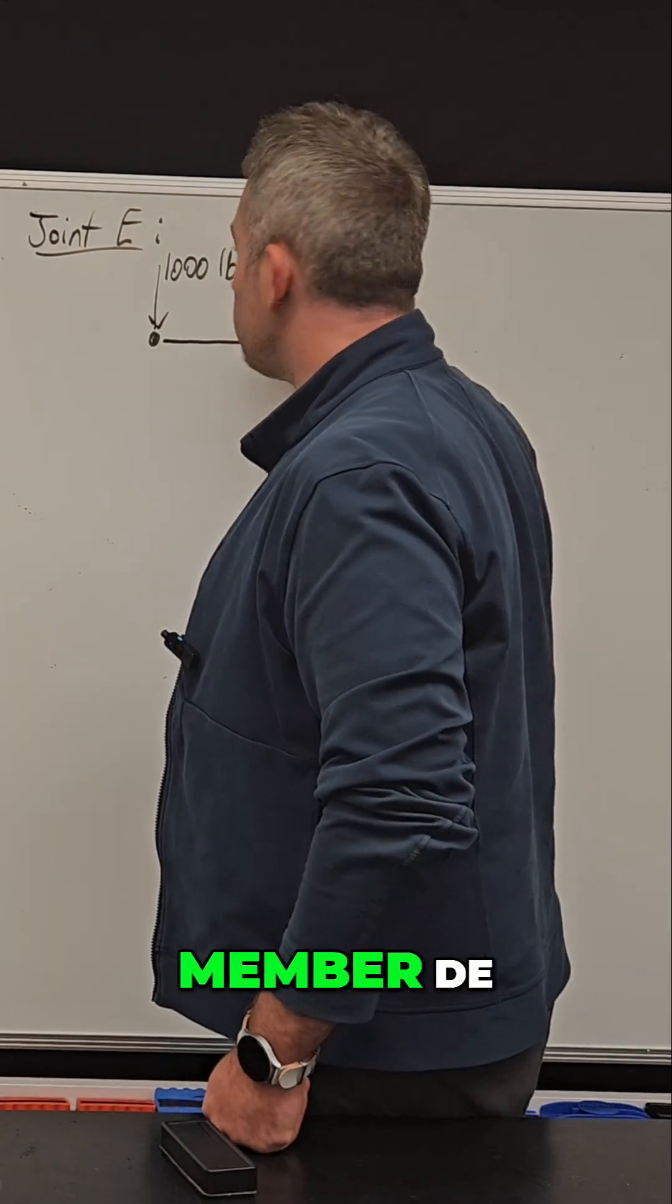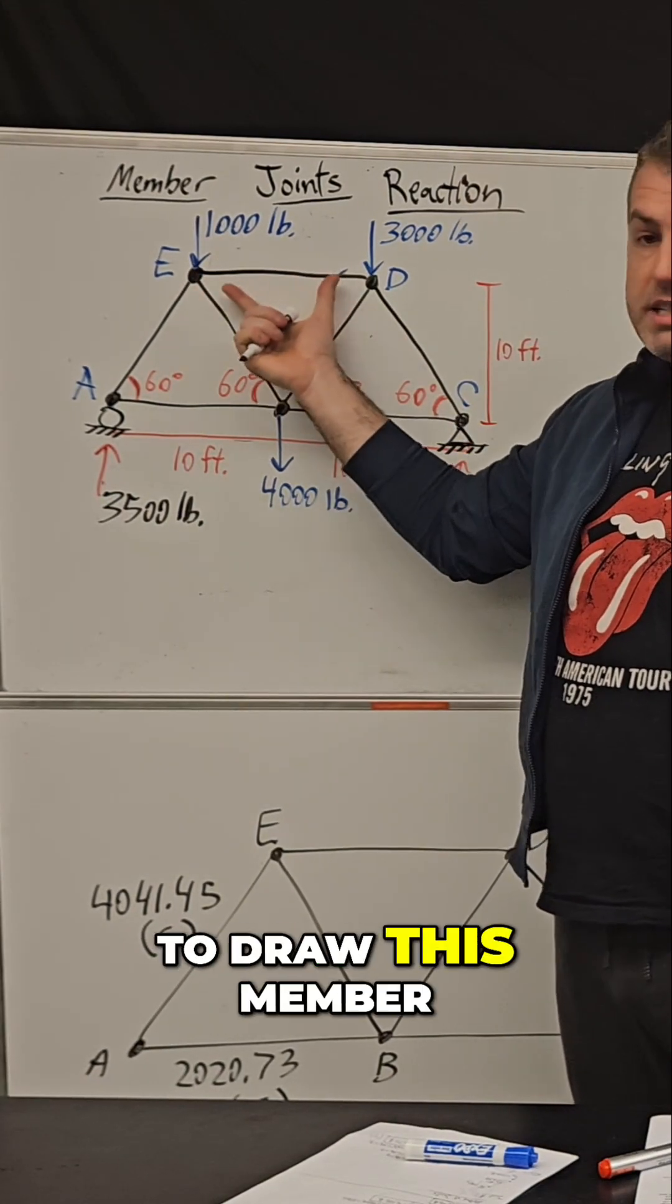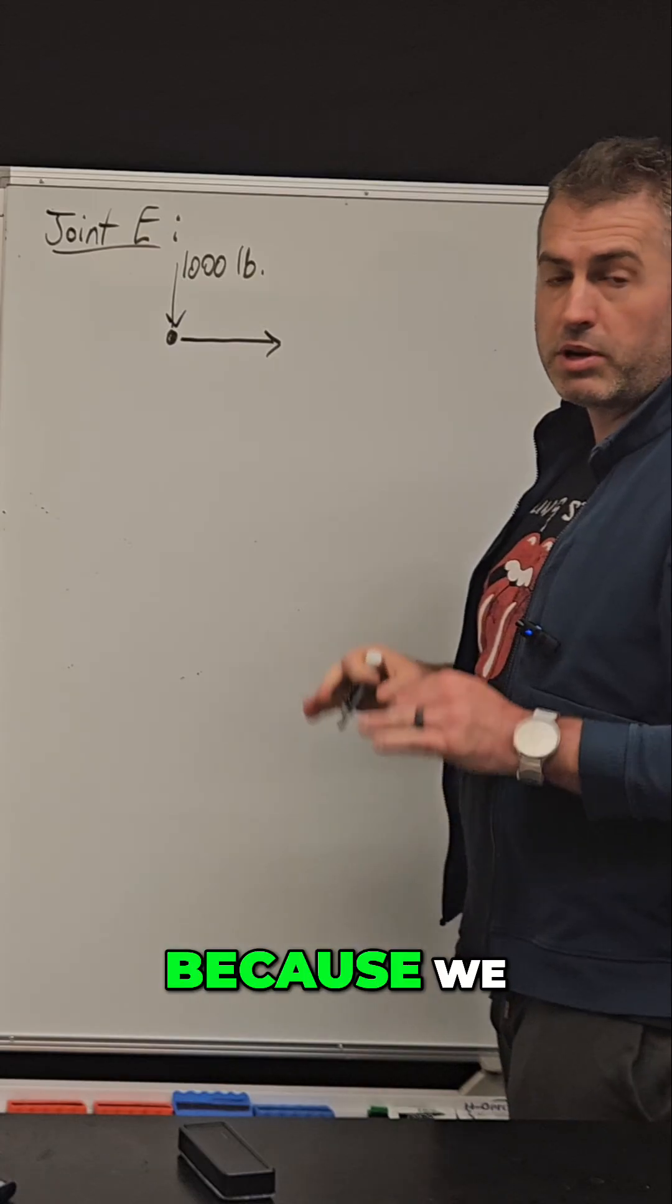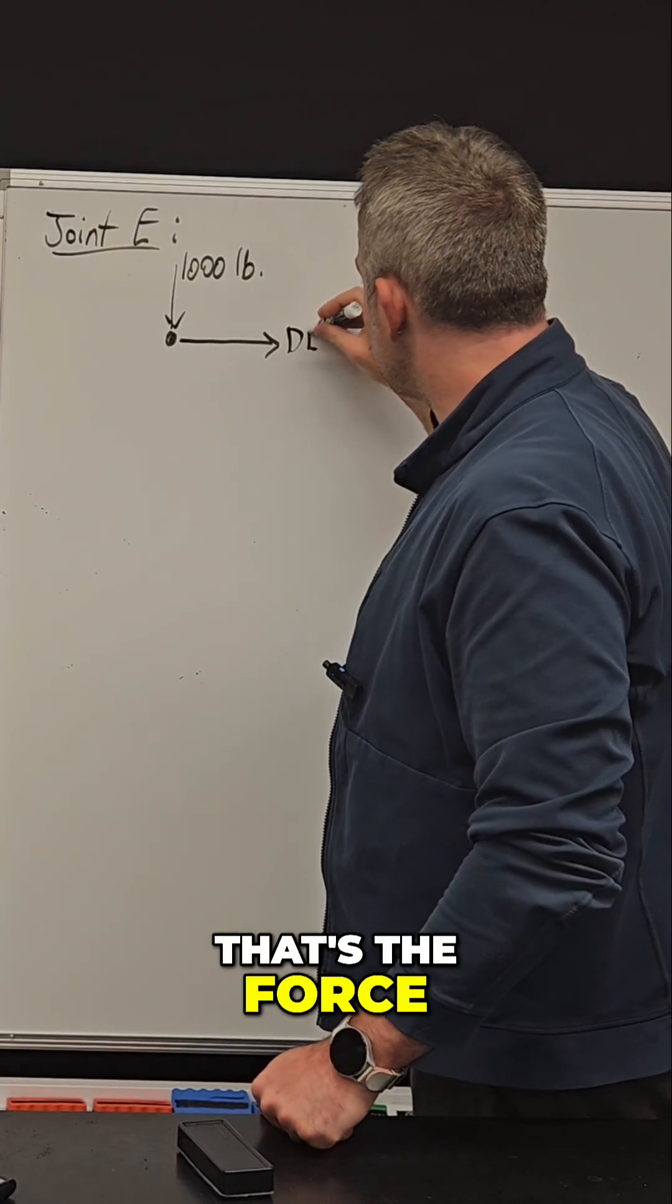Remember that member DE that's attached to joint E. We have to draw this member, and we're going to assume that it is also in tension because we always assume tension. So I'm going to say that's member DE—that's the force in that member.